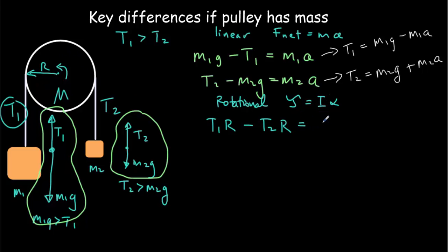The rotational inertia, if this is a cylinder, the rotational inertia of a cylinder is M over 2 times R squared. And the angular acceleration, hopefully you recall that the angular acceleration is equal to the linear acceleration divided by the radius.